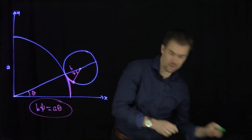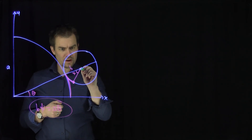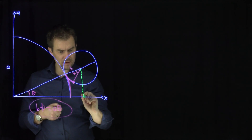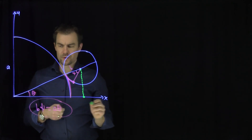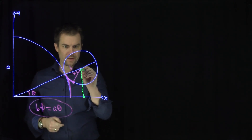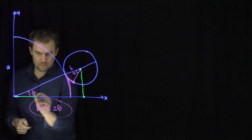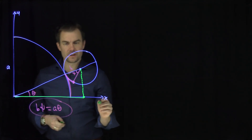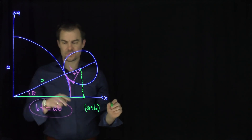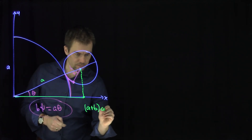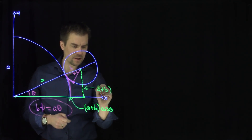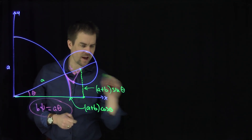Now the key thing to do is I'm going to draw another angle over here and draw a parallel down over here. What are the coordinates of this point? How far away are we from the x-axis? This long length over here is going to be a plus b times cosine of theta — that's this length over here. And this dotted line length is going to be a plus b times the sine of theta.